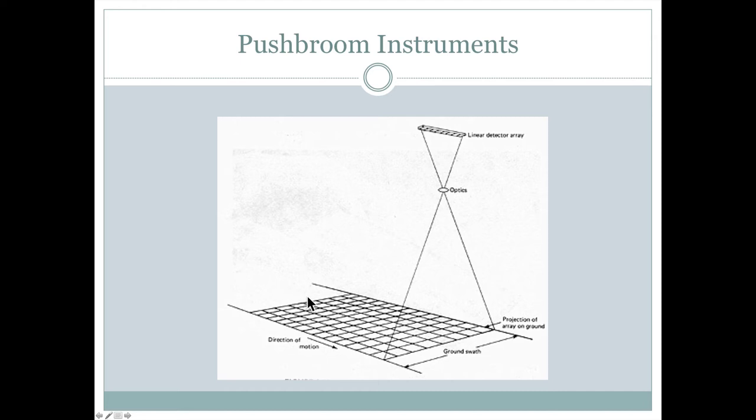And as the satellite is moving in this direction here, it's collecting data from the ground first in this row here, then the next row, then the next row, and the next row. So it's kind of like a broom that's being pushed in this direction here. It's just collecting one swath at a time, collecting the swath that's directly beneath wherever the satellite happens to be at that point. That would be a push broom instrument.